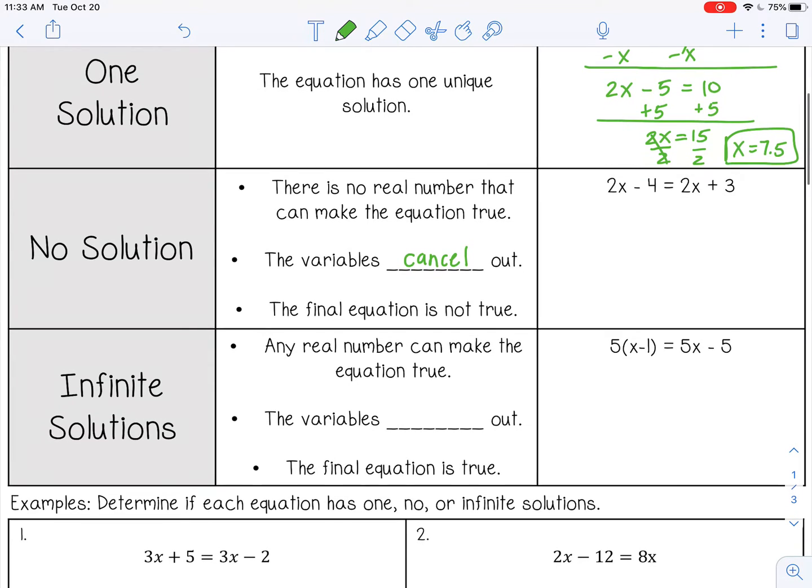So on this one, if I were to go to solve it, I could subtract 2x from both sides. But as you can see, my variables cancel on both sides. So I'm left with negative 4 equals positive 3. Well, negative 4 does not equal positive 3. So this has no solution. That means there's no number I can substitute in for x to make that equation true. It doesn't have a solution.